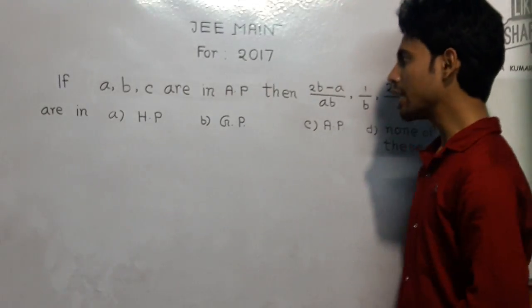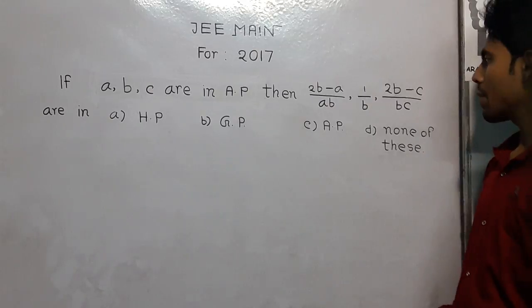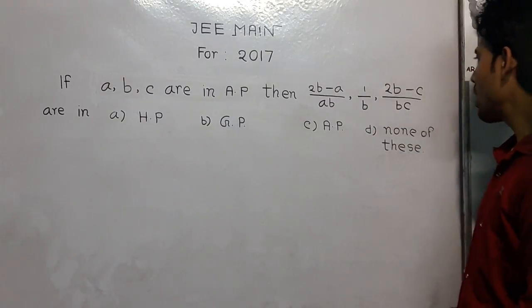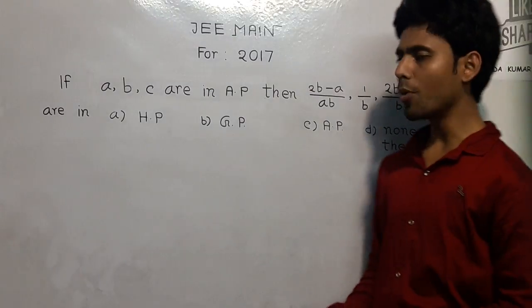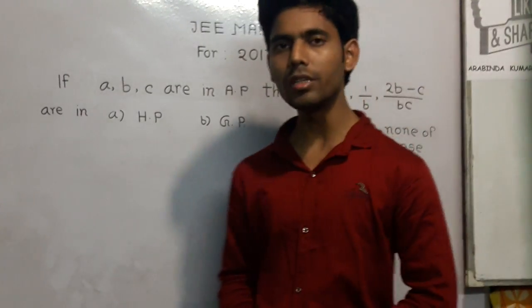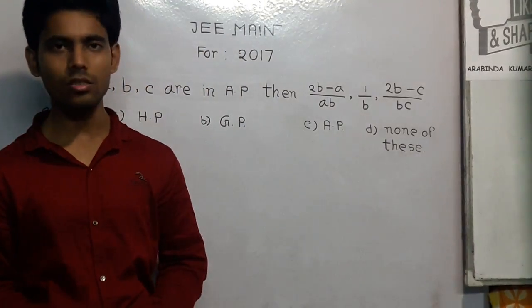Today's problem is: if A, B, C are in an arithmetic progression, then 2B minus A upon AB, 1 upon B, and 2B minus C upon BC are in: option A, harmonic progression; option B, geometric progression; option C, arithmetic progression; and option D, none of these.